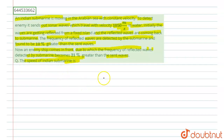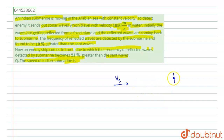Let us consider the submarine is here and its velocity is Vs, moving in this direction. Here we can see the observer. The wave will travel out and come back. In the first case, the submarine is the source and the island is the observer. In the second case, the island is the source and the submarine is the observer.